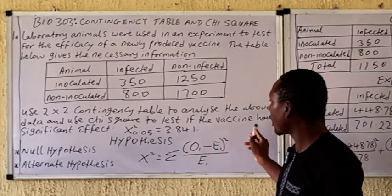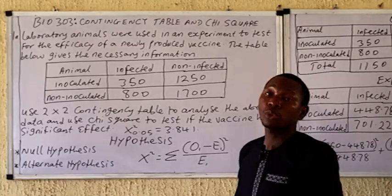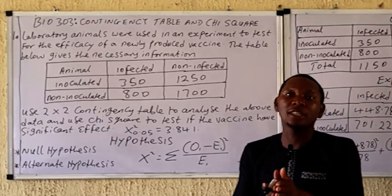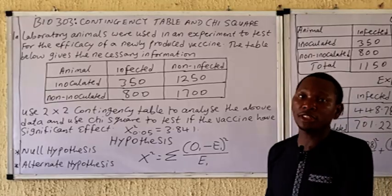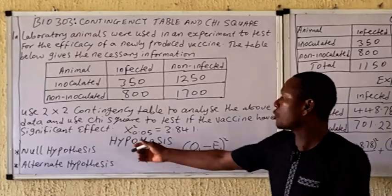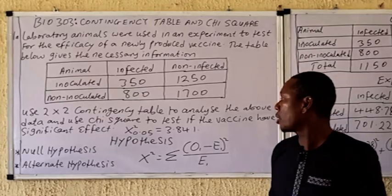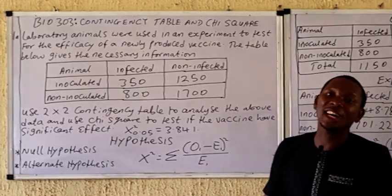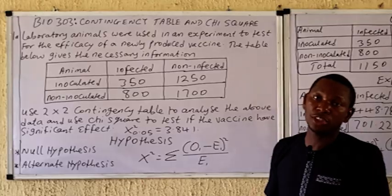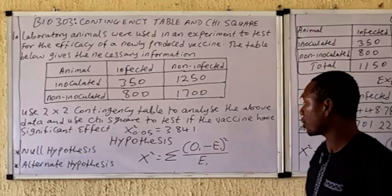We use the chi-square to test if the vaccine has significant effects. The null hypothesis states there is no significant difference between those inoculated with the vaccine and those that were not. In the null hypothesis, any difference observed may be as a result of chance. The alternate hypothesis states there is a significant difference in infection rate between the inoculated and non-inoculated groups.